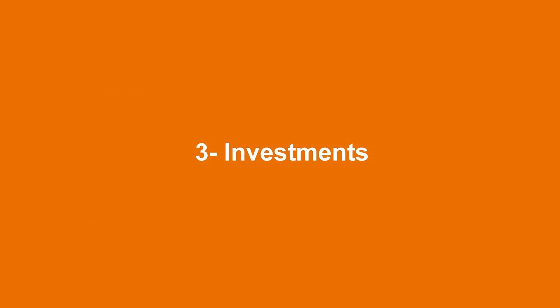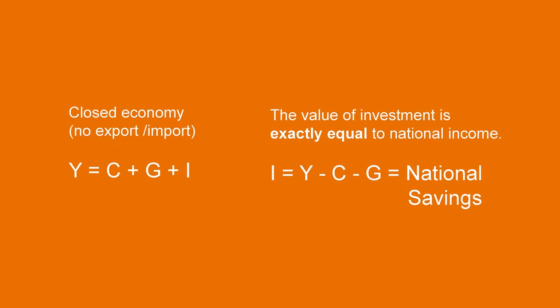We have all these savings now. Will they just sit there in a bank? Not really — this is where investments come in. Remember that the economy is a closed system, so nothing really disappears in there. For simplicity, let's assume that we are in a country with no exports or imports. Then the national income, Y, is a sum of consumption, C, government spending, G, and investment, I.